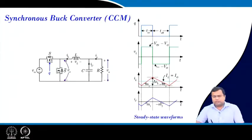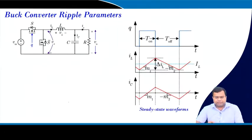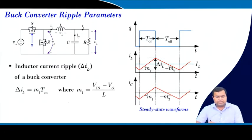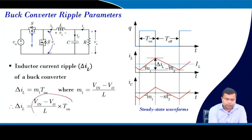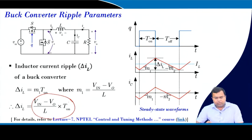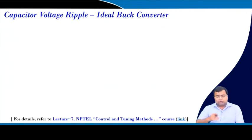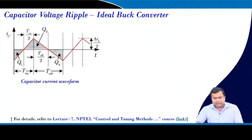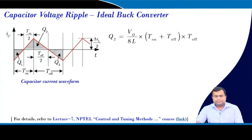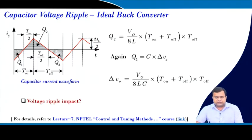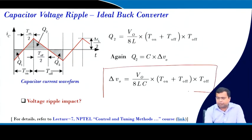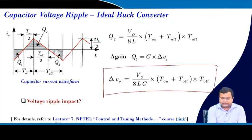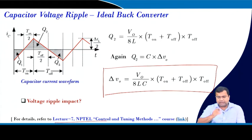If we take a buck converter in continuous conduction mode, these waveforms are known. If we take the ripple parameter, the inductor current ripple can be expressed in terms of input voltage, output voltage, and the on-time. If we consider the output capacitor voltage ripple, by means of charge balance we can get this expression in terms of on-time and off-time, as discussed in lecture 7 of our earlier NPTEL course.